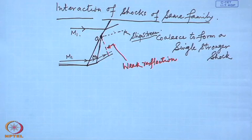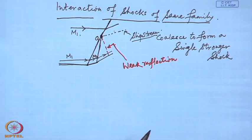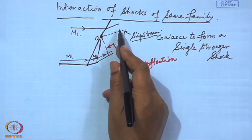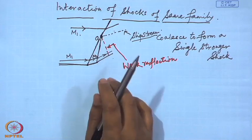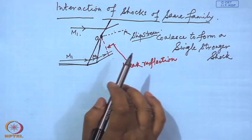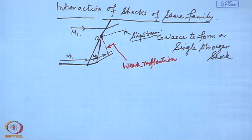When there are a number of shocks of the same family and they coalesce together — as happens when there is a smooth turn or a number of turns — there are many such reflected waves, and even these reflected waves when they hit the wall again can reflect. Consequently, there is a series of reflected waves and their interactions, and there are large numbers of slipstreams from each intersection point, making this entire region full of vorticity and a continuously varying entropy field.